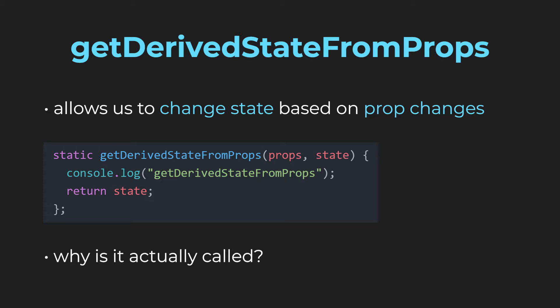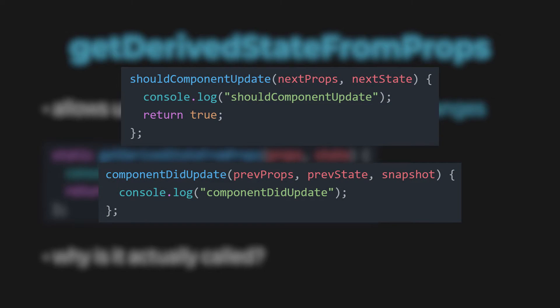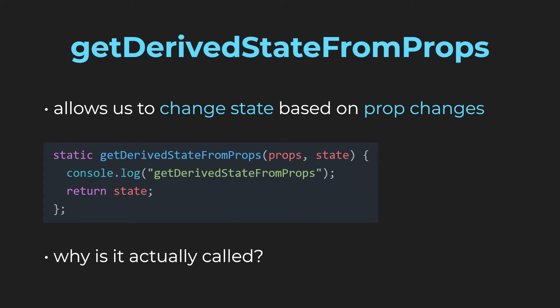There is one more strange thing about this method: the static keyword. It is the single static React lifecycle method. Static means that you can't access anything outside the method, like this.props, this.state, window, or other methods. If you take a look at the other lifecycle methods, you can see nextProps, nextState, previousProps, previousState, but in GetDerivedStateFromProps we just have props. The result of this is that it prevents side effects from happening.